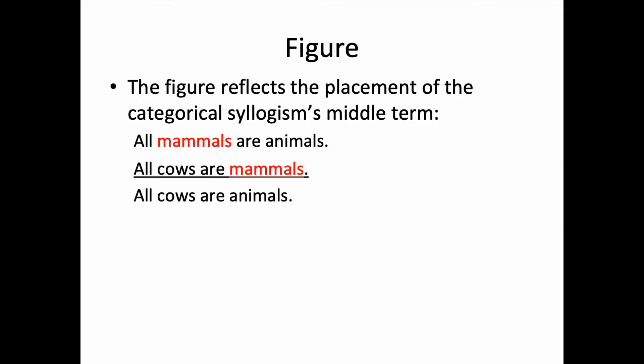The middle term is in the subject position of the major premise, and the predicate position of the minor premise. This is known as figure one, and there are four possible figures. Take a look at the placement of the middle term in each of the four figures. There are no other possible permutations, so we always have only four possible figures, and the numbering you see here is standard.